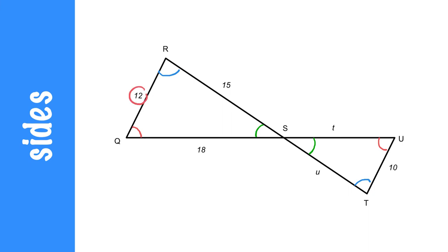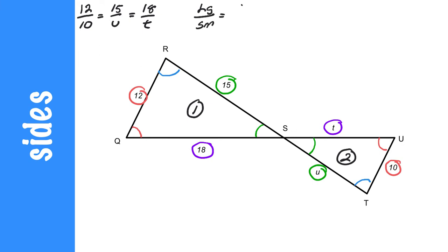So knowing that, 12 compares to 10, 15 compares to U, and 18 compares to T. I'm going to set that ratio up: 12 compared to 10 equals 15 compared to U equals 18 compared to T. Notice I went from triangle 1 to triangle 2 and was very consistent. I went from the large triangle to the small each and every time. Be careful not to flip them, otherwise you won't find the correct values.